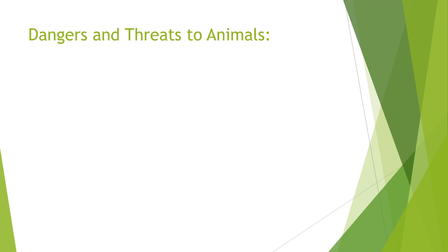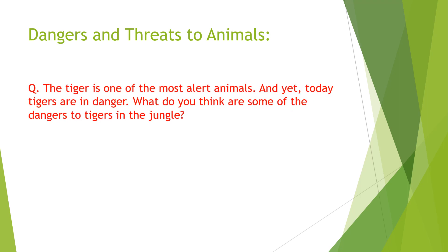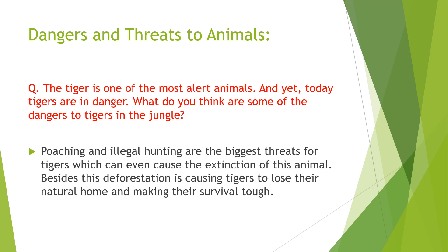To start with the lesson, let us first discuss what are the dangers and threats to animals. The tiger is one of the most alert animals, and yet today tigers are in danger. Poaching and illegal hunting are the biggest threats for tigers, which can even cause the extinction of this animal. Besides this, deforestation is causing tigers to lose their natural habitat, making their survival very tough.